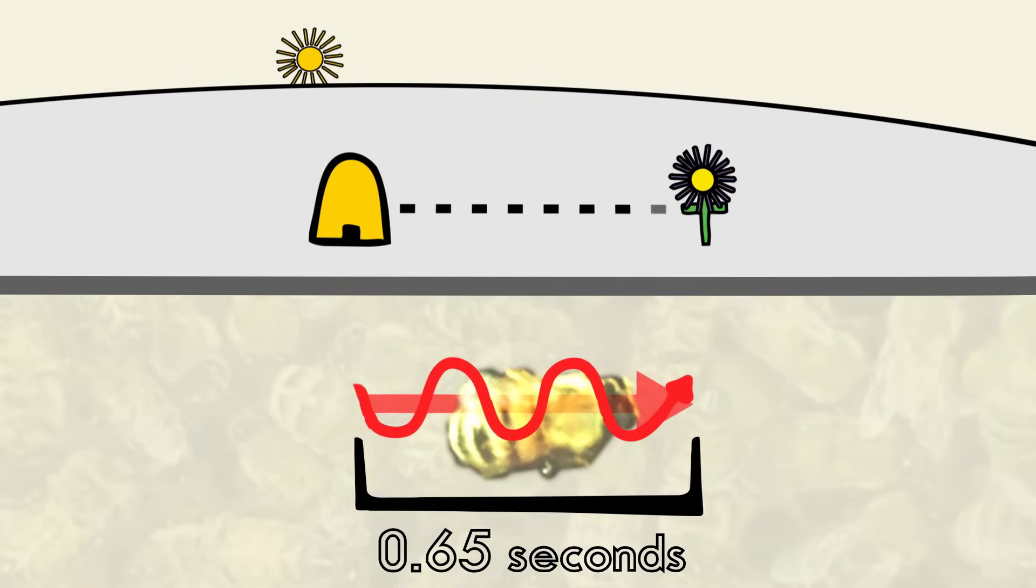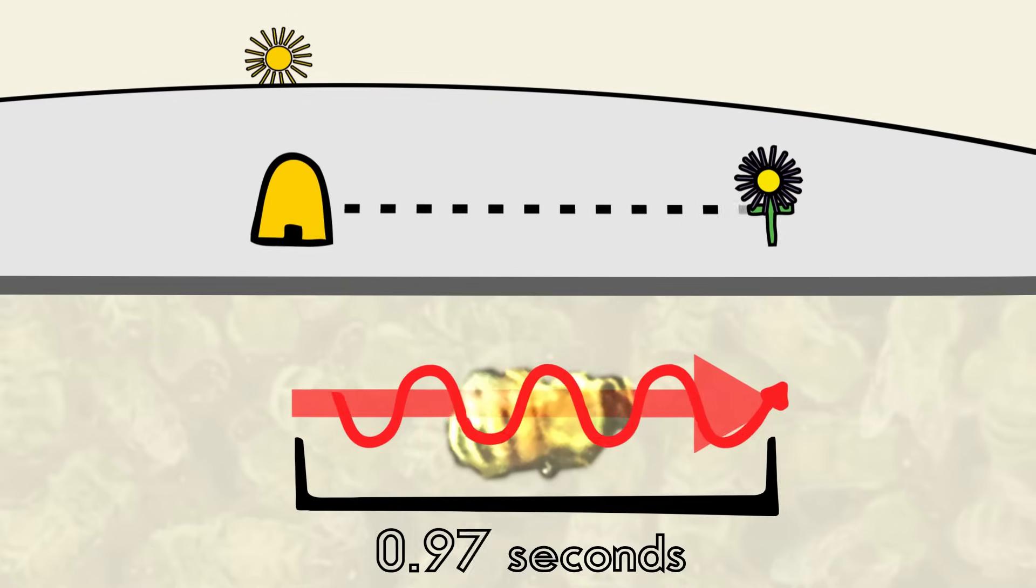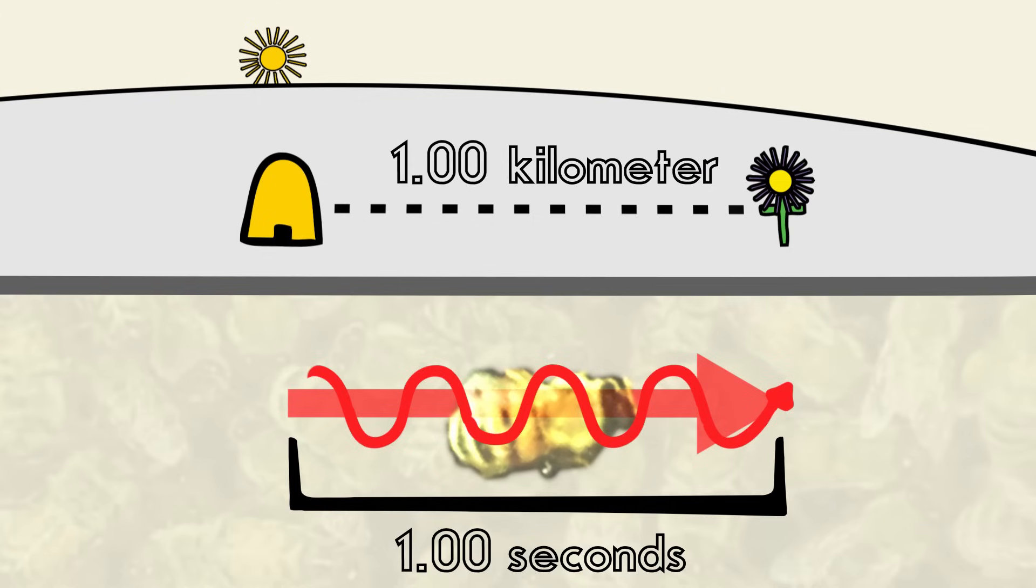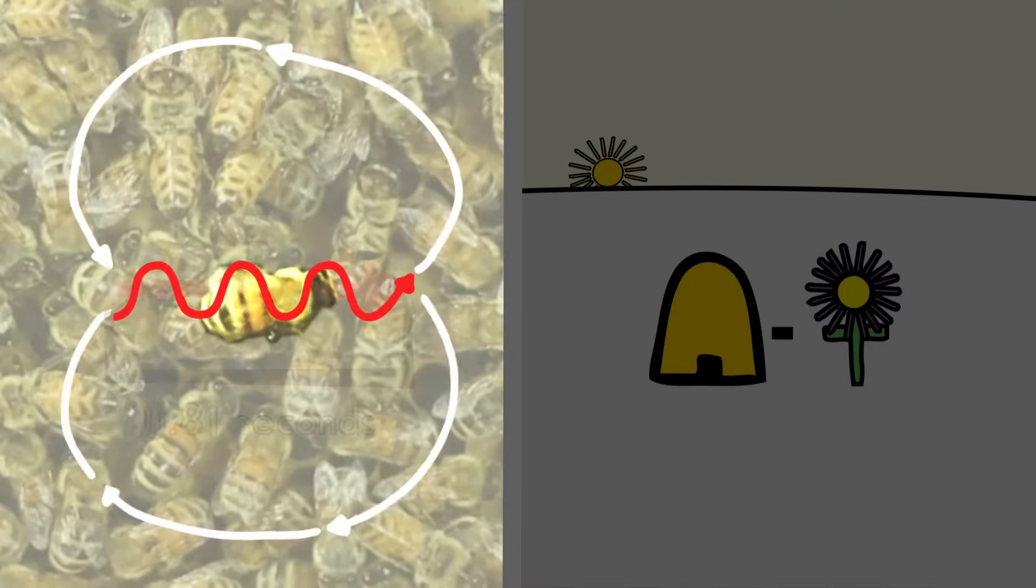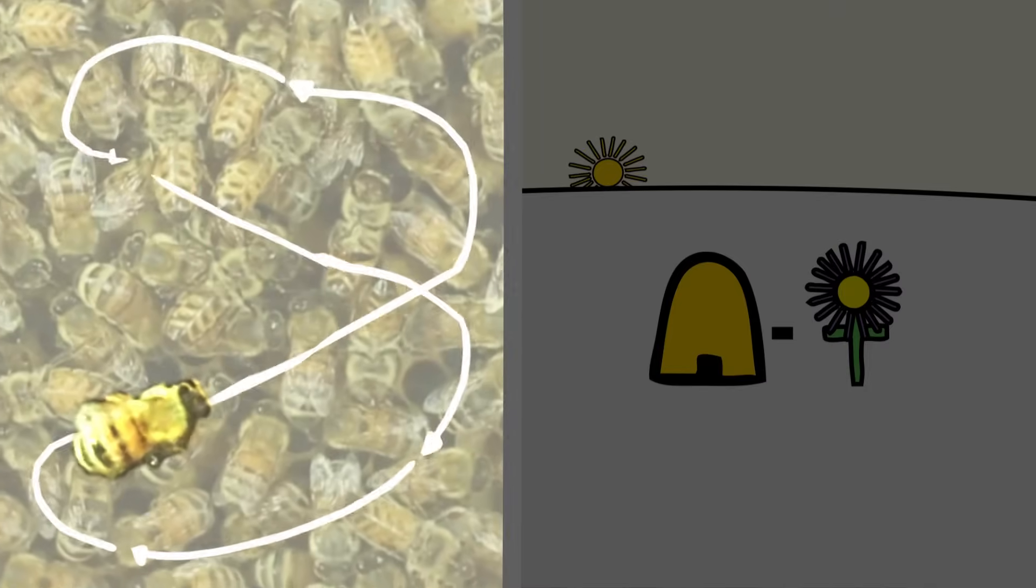In general, a bee increases the duration of this section by one second for every kilometer of distance to the food. When food is within several meters of the hive, the central section of the dance will shrink, causing a circular dance.